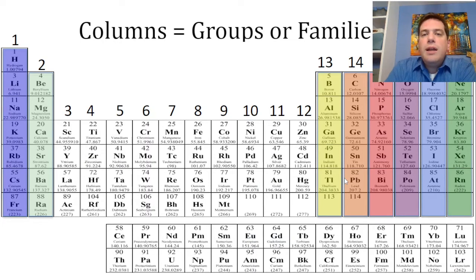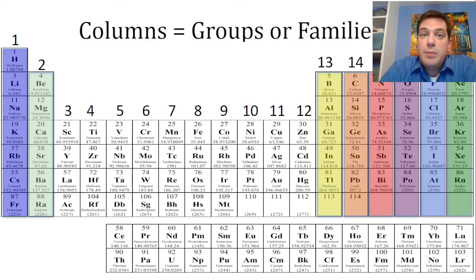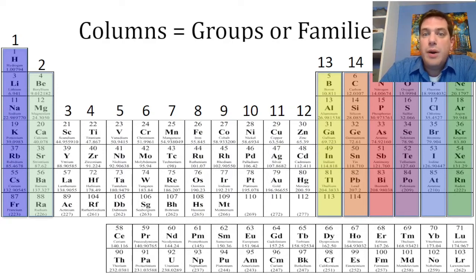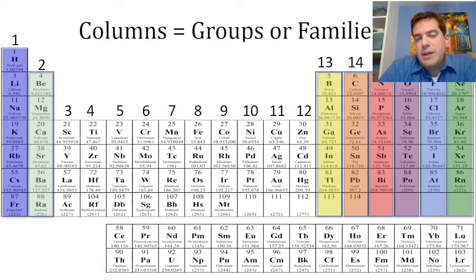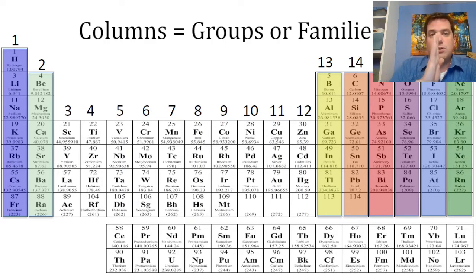All right. Some terminology that we need to know — which means memorize — and here's where you can pull out your blank periodic tables and color them in as I go. This is going to be lightning fast, so please pause the video to keep up. First, the periodic table is arranged in columns. Those columns are called groups or families.